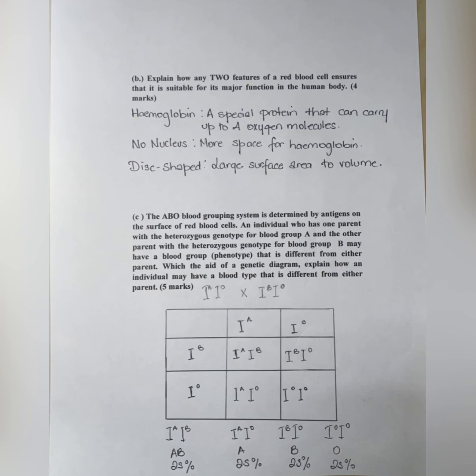may have a blood group phenotype that is different from either parent. With the aid of a genetic diagram, explain how an individual may have a blood type that is different from either parent.